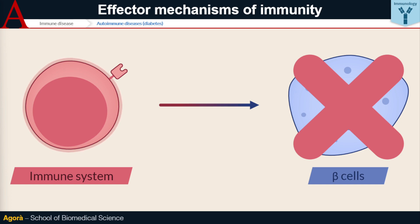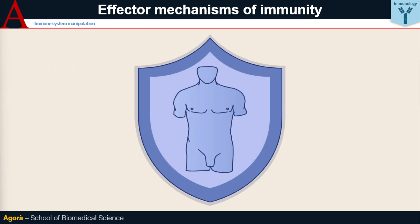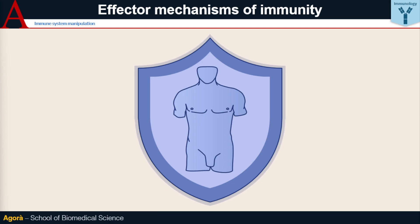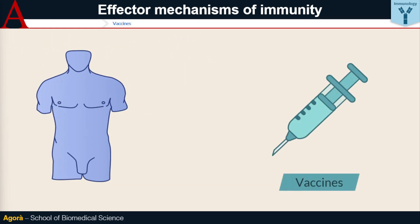Hence, immune responses can be either harmful or beneficial depending on where they develop. In conclusion, it should be noticed that over the decades, the increasingly precise characterisation of immune mechanisms has led to the development of useful strategies to manipulate the immune system for therapeutic purposes. Think of vaccines, the most important preventive medical tool we have. They are based on the inoculation of material from a particular pathogen, with the aim of developing a protective immunological memory against a real infection.